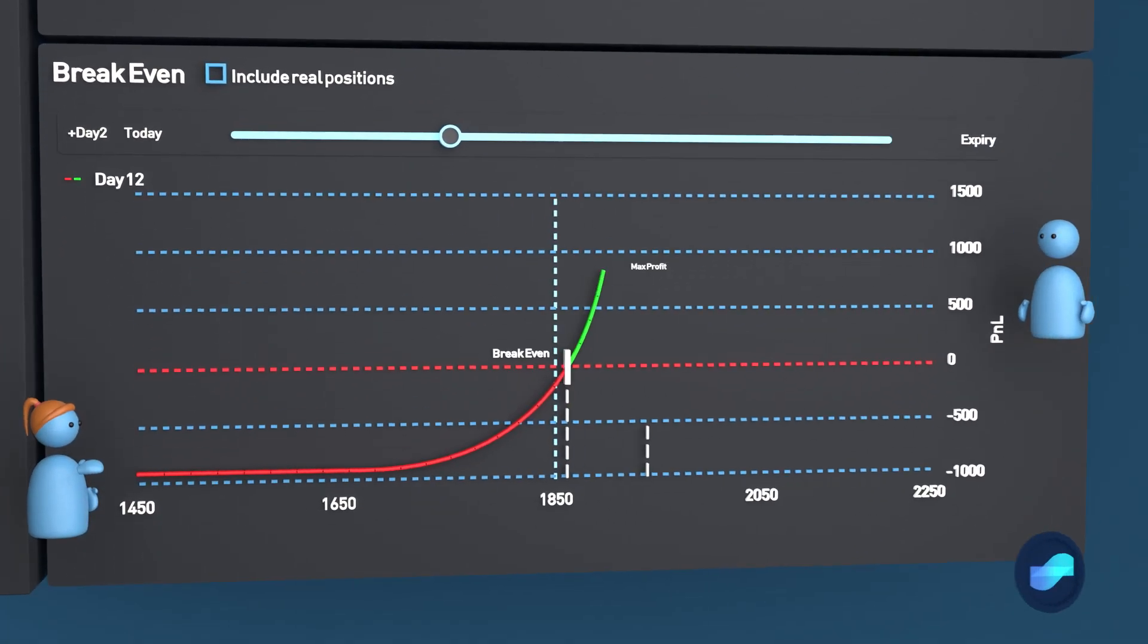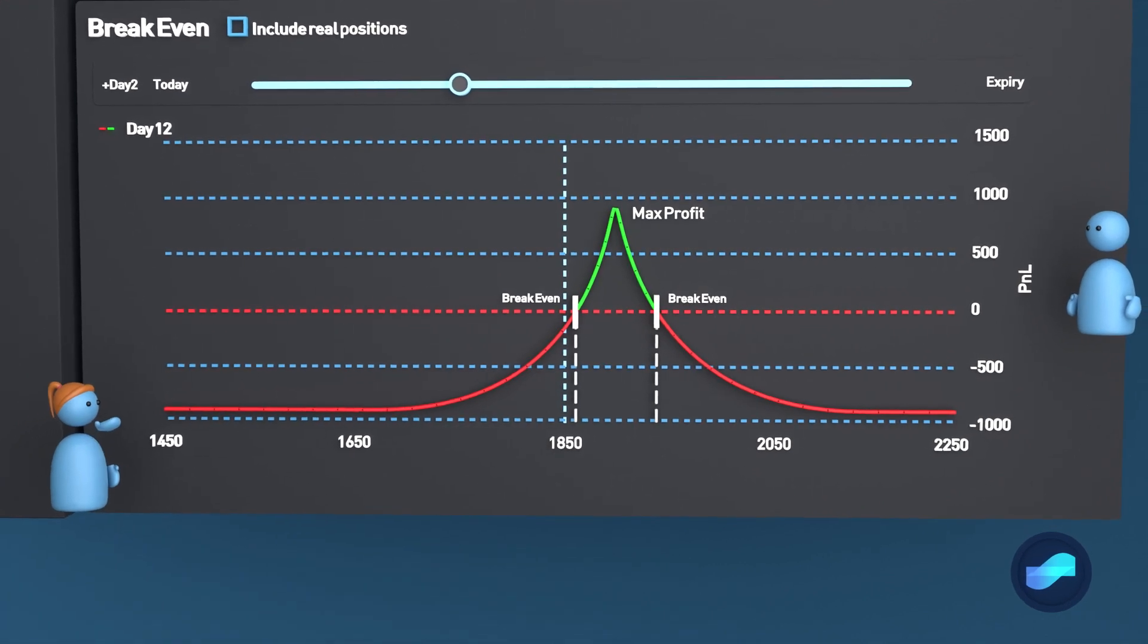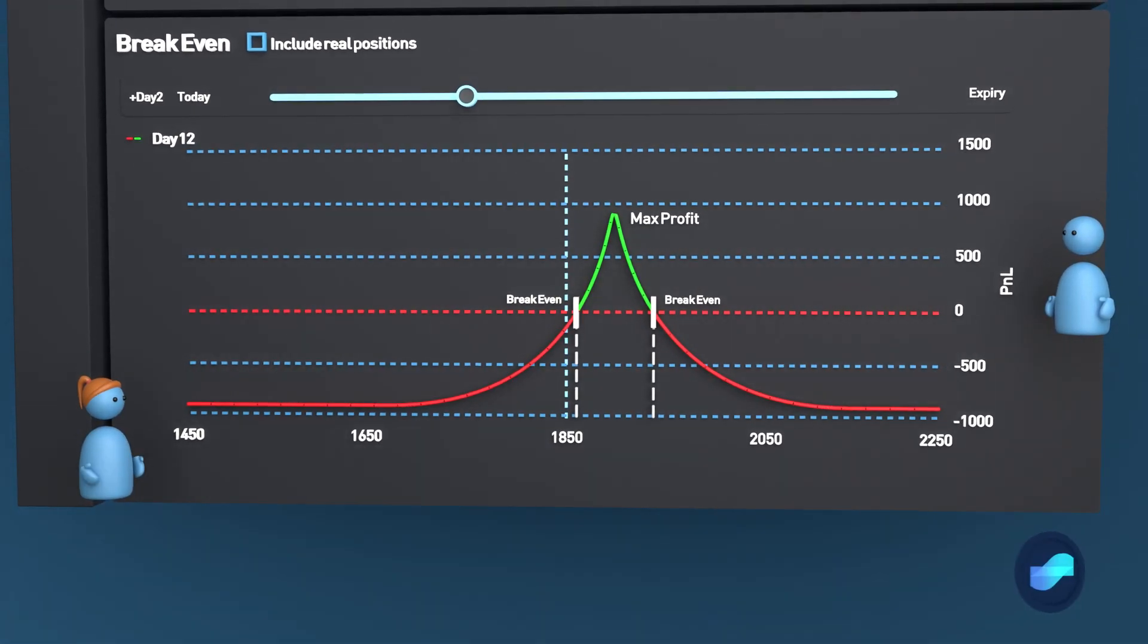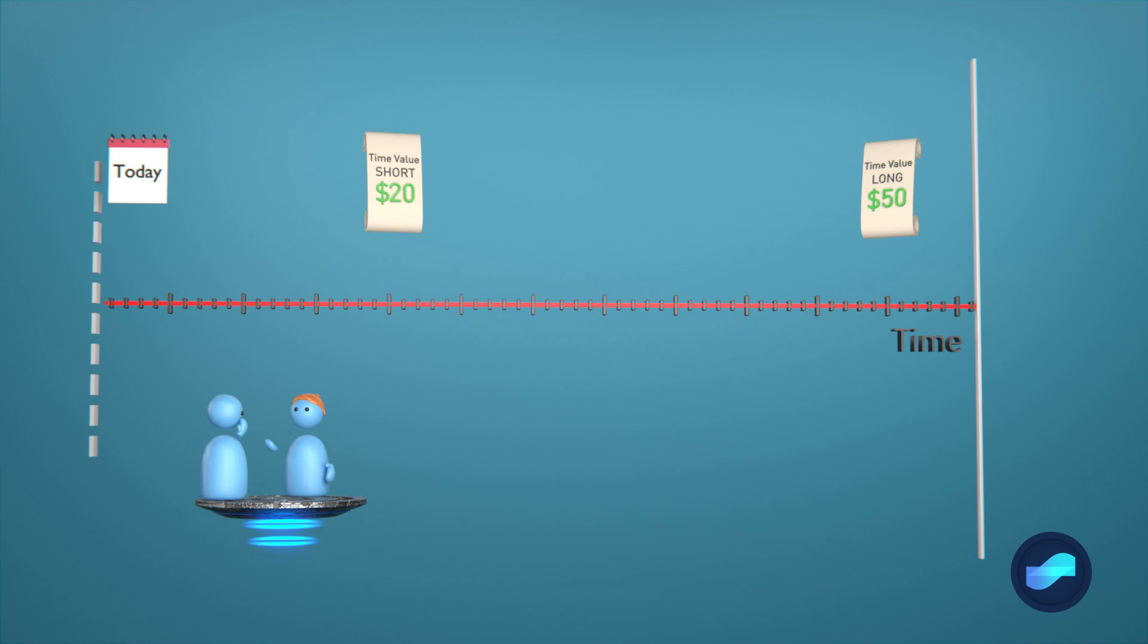Now, after the expiration of the first option, this strategy is essentially over. But you have a few choices in front of you. What would be your next move in this scenario?